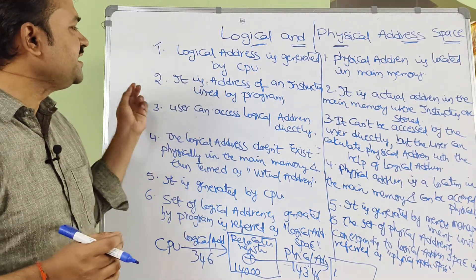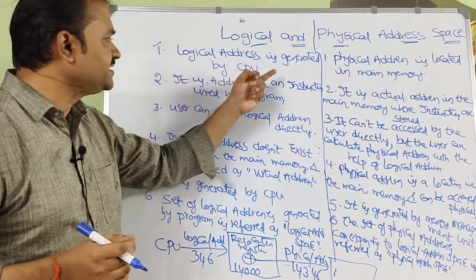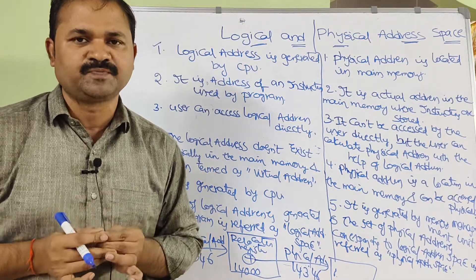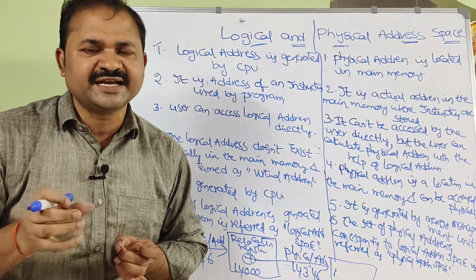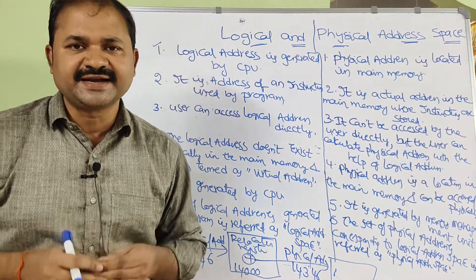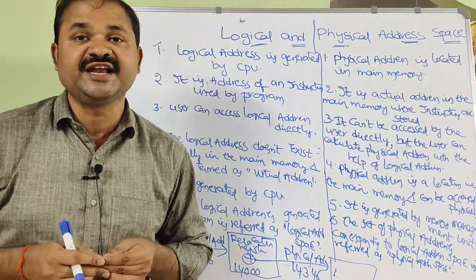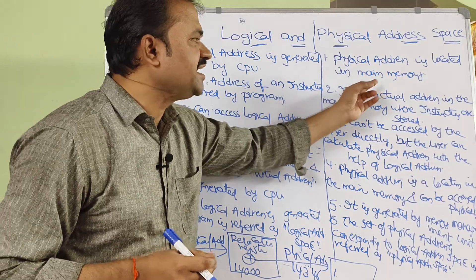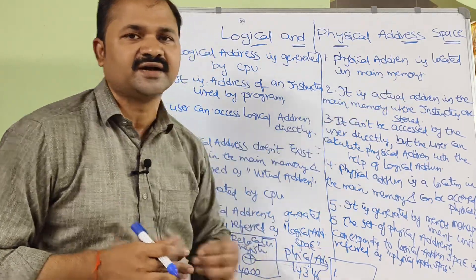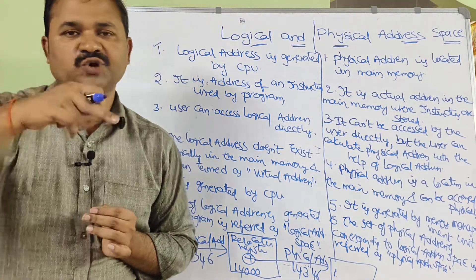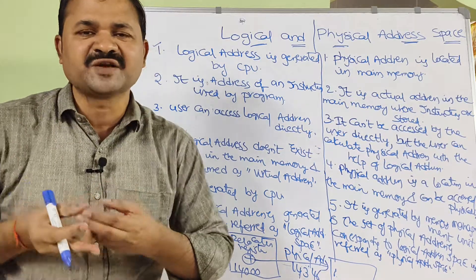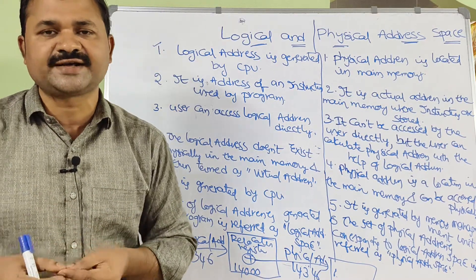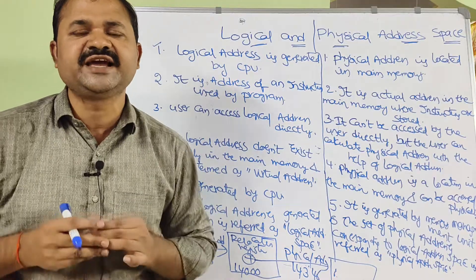Logical address means it is an address which is generated by the CPU. If the CPU generates an address, that address is called a logical address. Whereas, physical address is located in the main memory. In main memory, we have some instructions, and those instruction addresses are nothing but physical addresses.